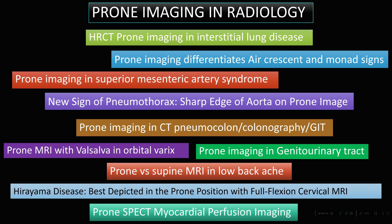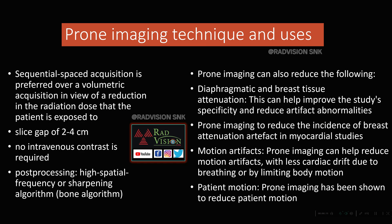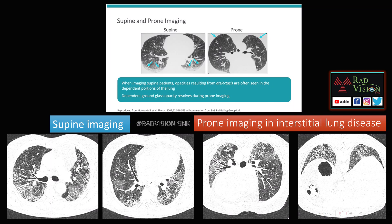Coming to the technique of HRCT prone imaging — you can pause the slide. The uses of prone imaging include reducing diaphragmatic and breast tissue attenuation, which helps improve study specificity and reduce artifact abnormalities. Prone imaging also reduces breast attenuation artifacts in myocardial studies, and both motion artifacts and patient motion are reduced.